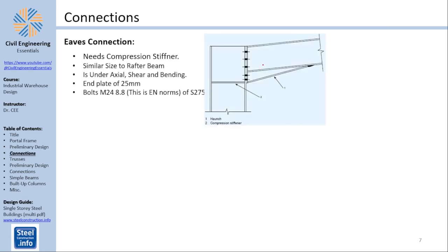Now, about connections. For the eaves connection, you need a rigid connection. Once again, the bolts are perpendicular to the column. They go through the column, which means that they can develop tension and compression, which means this is a moment resisting or rigid connection. Also, there is a compression stiffener because usually this will, the negative moment here will apply a compression on the bottom, which will be transferred to the column as shear. You don't want to break your upper flange and that's why you need stiffness. The eaves connection, the haunch has similar sides to the beam rafter, is under axial shear and bending. The end plate is usually 25 millimeters and the bolts used are M24 8.8 S275. This is Euro norms.